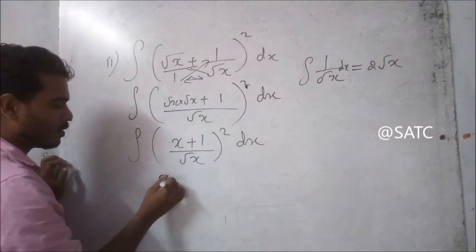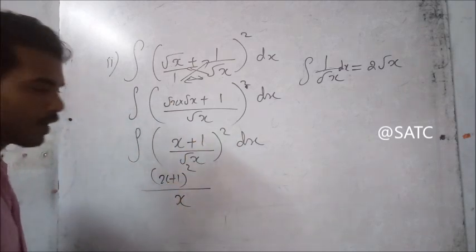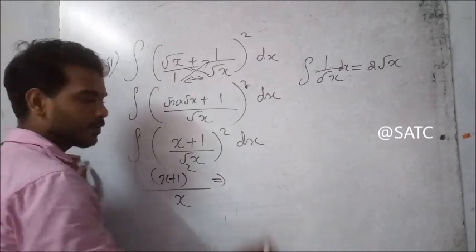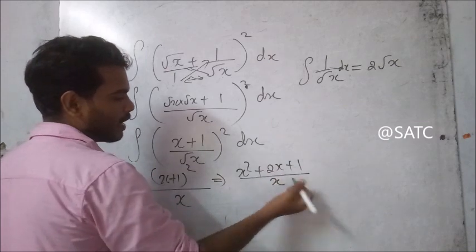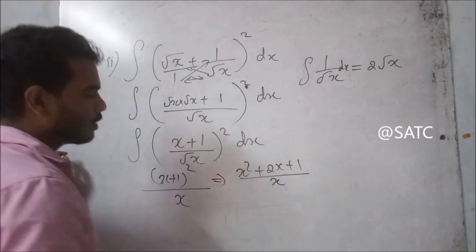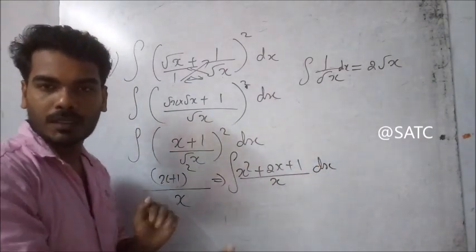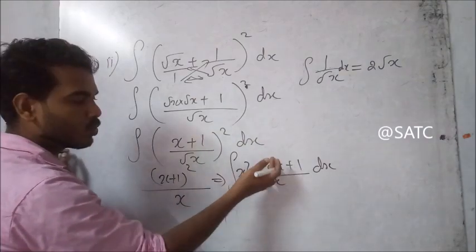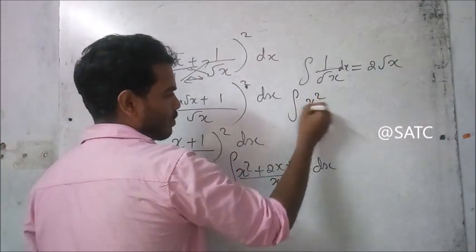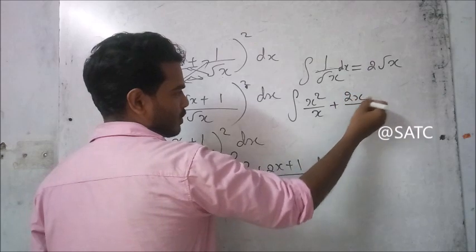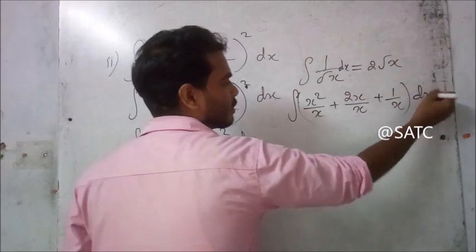So x plus 1 whole square divided by root x all squared is x. That implies x plus 1 all squared equals x squared plus 2x plus 1, divided by x. So we need integral of x squared by x plus 2x by x plus 1 by x dx.